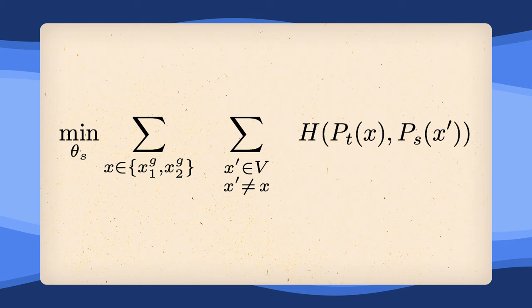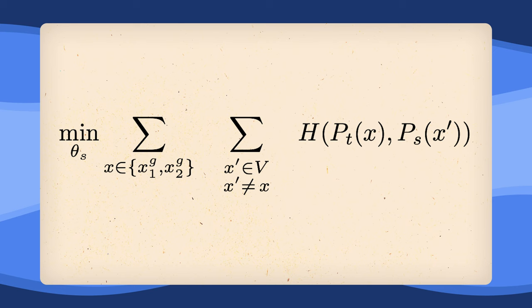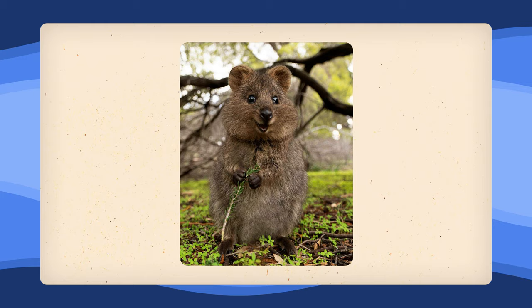What also seems to work better is not simply using the cross-entropy over all different view embeddings, but using a very specific setup. Let's see what this actually means and return to our little friendly quokka. Let's again generate multiple views. This time, let's say four.